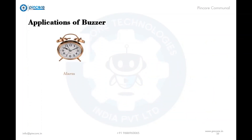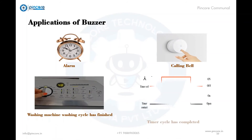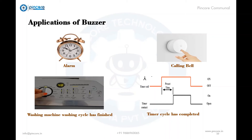These are a few applications of buzzers which we see in our daily life: alarm systems, calling bells, washing machines — where the buzzer beeps when the washing machine finishes its operation — and timers, where whenever a timer cycle completes, the buzzer beeps and indicates the end of operation.